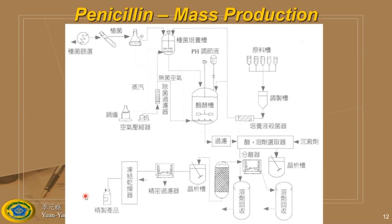As a result, two things happen: first, you save lives; second, you make the product very cheap so that everyone can use penicillin. Who did this? Chemical engineers. They transformed a batch process into a continuous mass production process. That's why life became wonderful — thanks to chemical engineers.